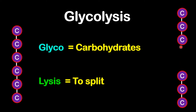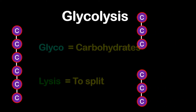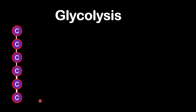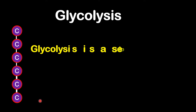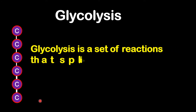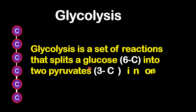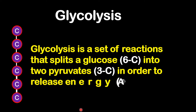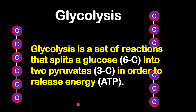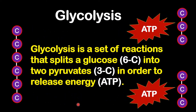These three-carbon molecules are pyruvates that are formed from a six-carbon molecule, which is glucose. Glycolysis is a set of reactions that split a glucose molecule, which is six-carbon, into two pyruvates — three-carbon molecules — in order to release energy in the form of ATP.